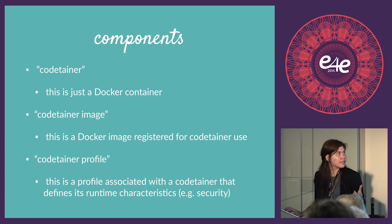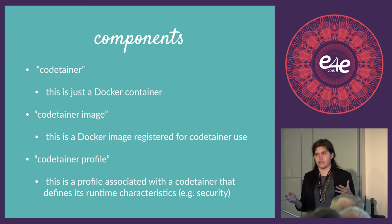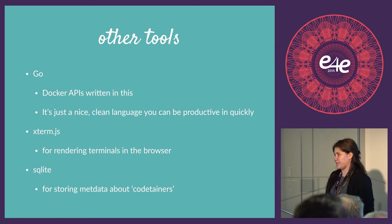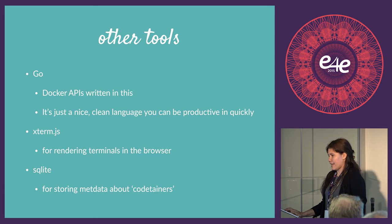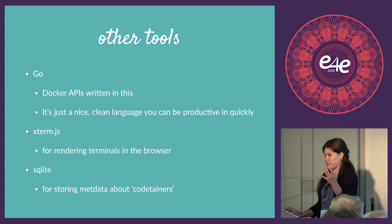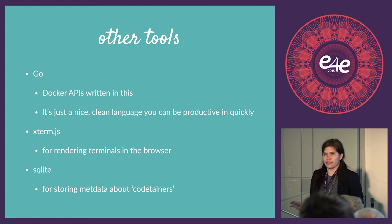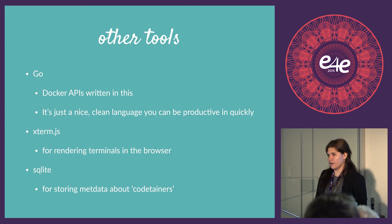A CodeTainer is just a Docker container. The image is a Docker image registered for use in a CodeTainer. And a profile is basically a JSON file whose format matches the Docker API configuration for security. Other tools I used to build this include Go — I've been doing a lot of programming in Go recently because it gets the right balance between flexibility and speed of development. I like that it's statically typed and how uniform the code looks. The Docker APIs are written in Go, so it's easier to take advantage of them using the same language. I also used Xterm.js, which allows me to render terminal characters in the browser, and SQLite for storing basic metadata about CodeTainers — what's running, what images are registered, and what the profiles are.